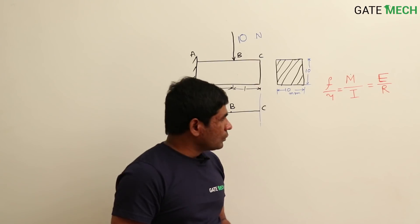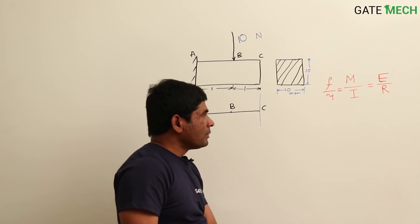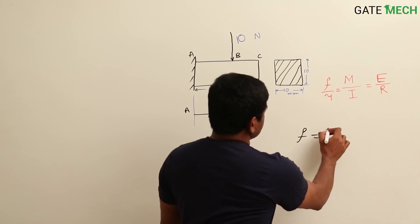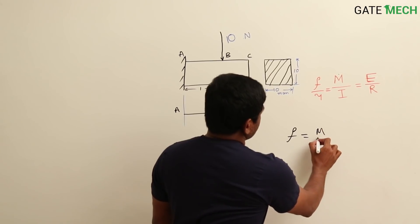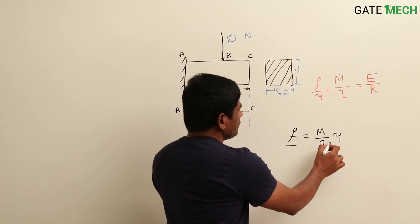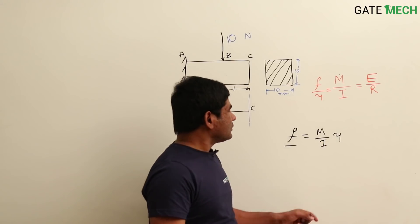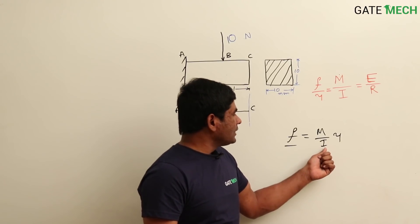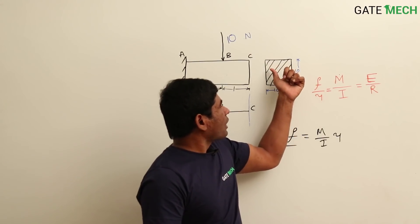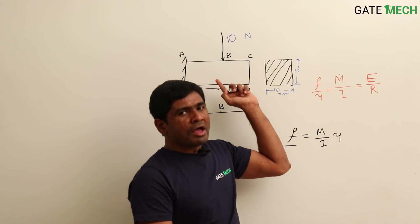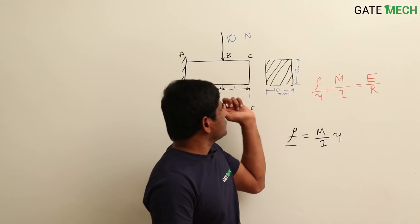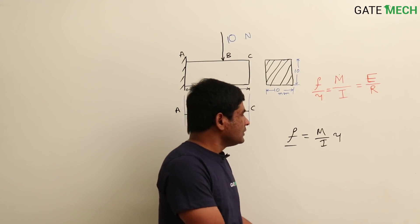We go back to the basic equation: bending stress f = M/I × y. Bending stress depends on three values, but in most cases we treat I as constant. I becomes constant whenever we take a constant cross-section — if the cross-section is not changing as you go along the beam, then I is constant. If the cross-section changes, then I also changes.